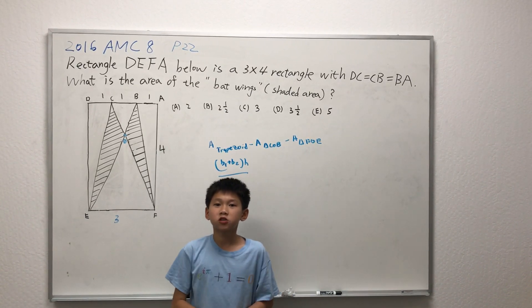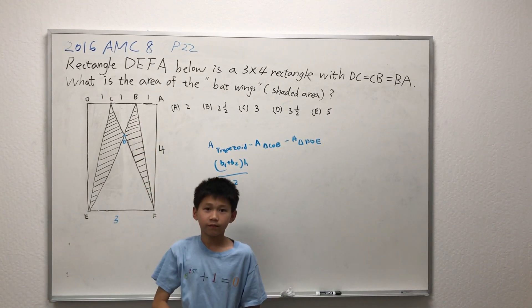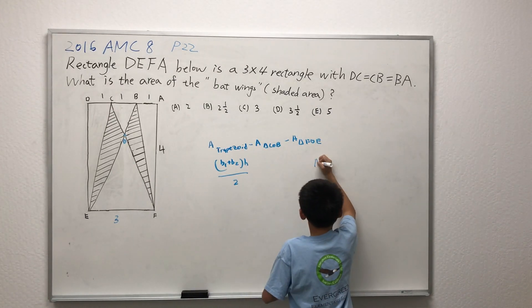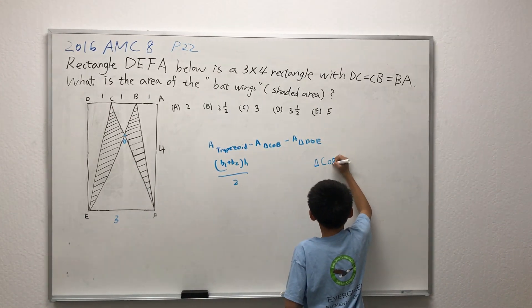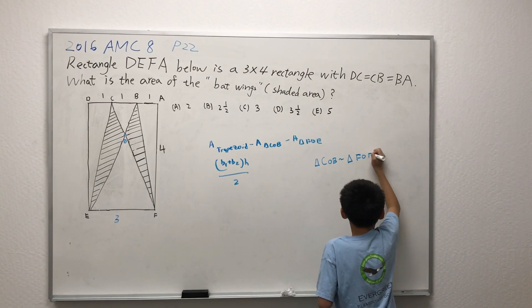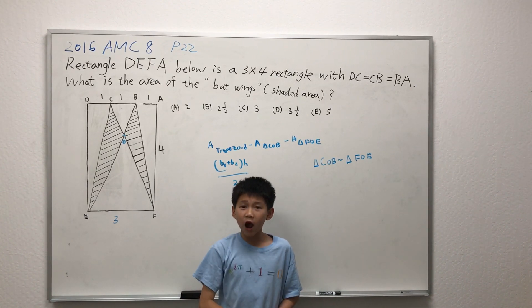We are using similar triangles to find the ratio of the bases so we can find the ratio of the heights. Triangle COB and triangle FOE look suspiciously similar. Let's see if we can prove why.